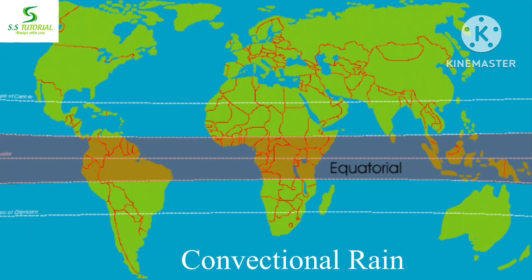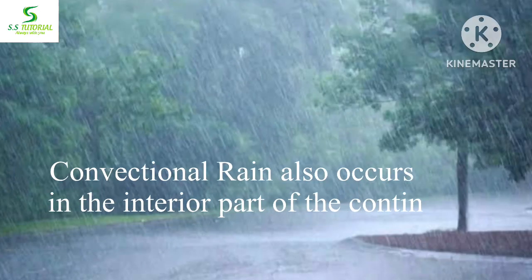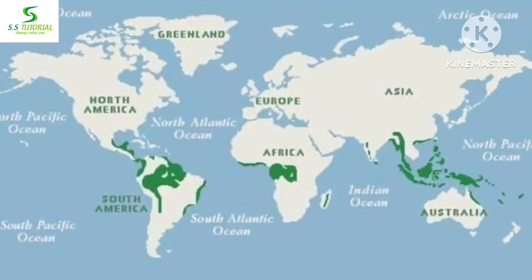Such rain is common in the equatorial region where the sun shines vertically throughout the year, and also occurs in the summer or hotter part of the day in the interior part of the continent. This type of rainfall occurs in places like Indonesia, Malaysia, the Amazon rainforest in Brazil, and Congo in Africa, among many other places.